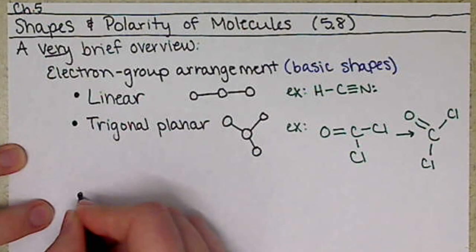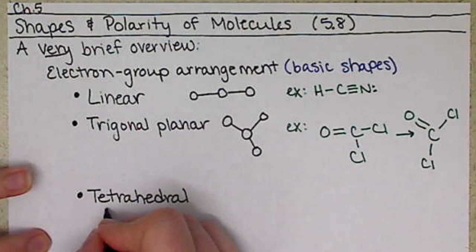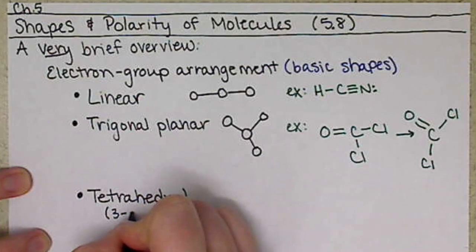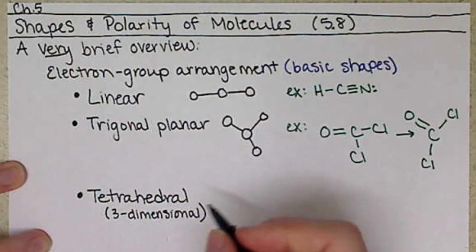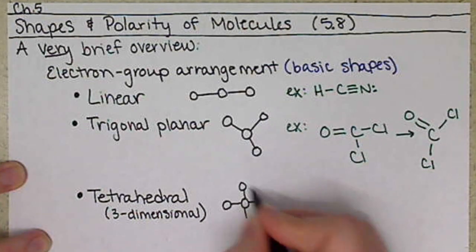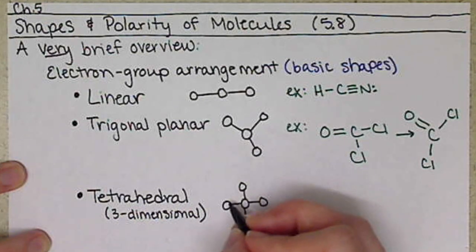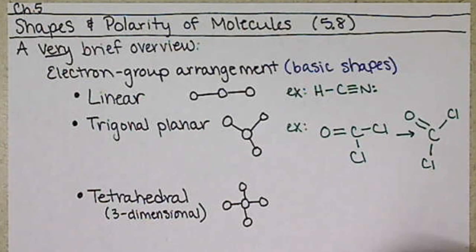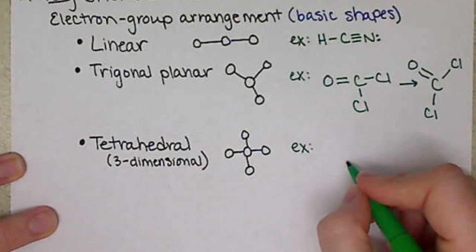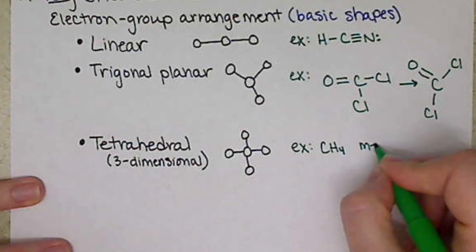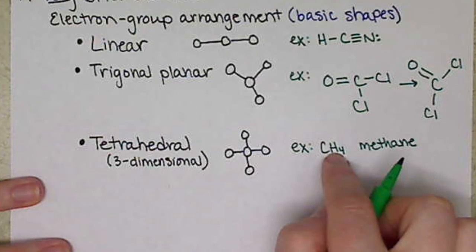Our third shape is called tetrahedral. And this is actually the first shape and the only shape that we're going to talk about that's three-dimensional. So drawing it not in three dimensions, this is what we would see for our Lewis structure. We're essentially going to see something on all four sides of that central atom. And remember, the outer circles here could be an element or a lone pair of electrons. We actually haven't drawn out an example of this, but a very simple one for us would be CH4 or methane.